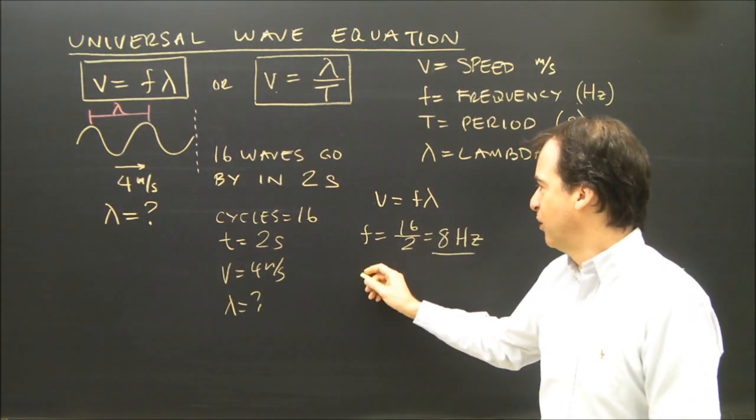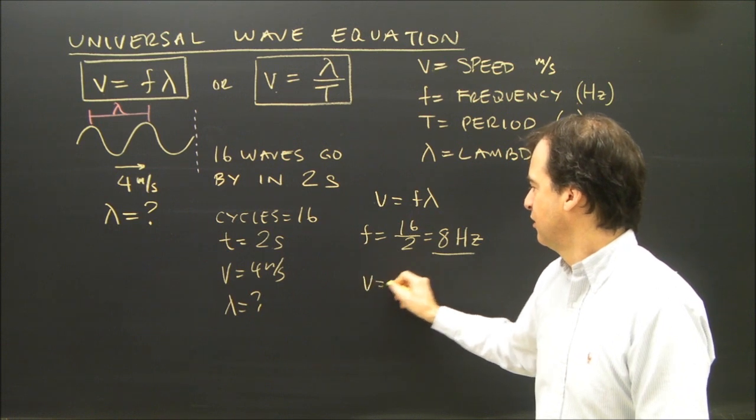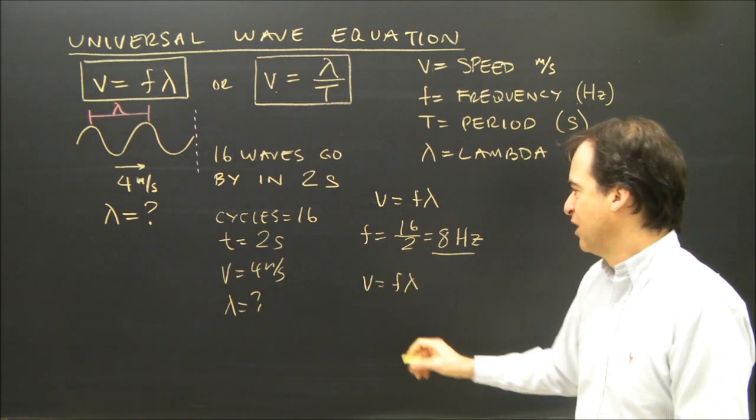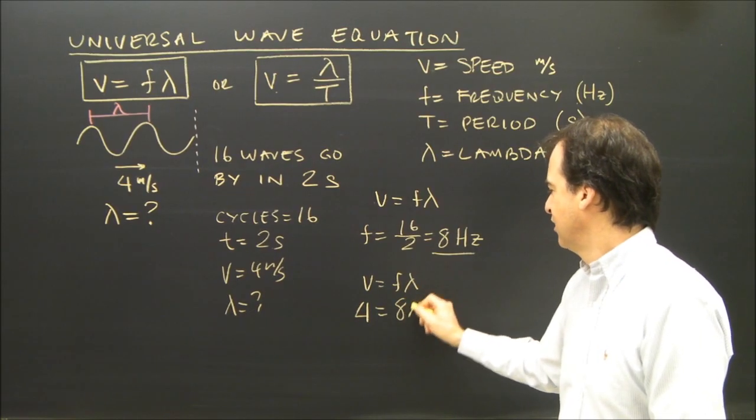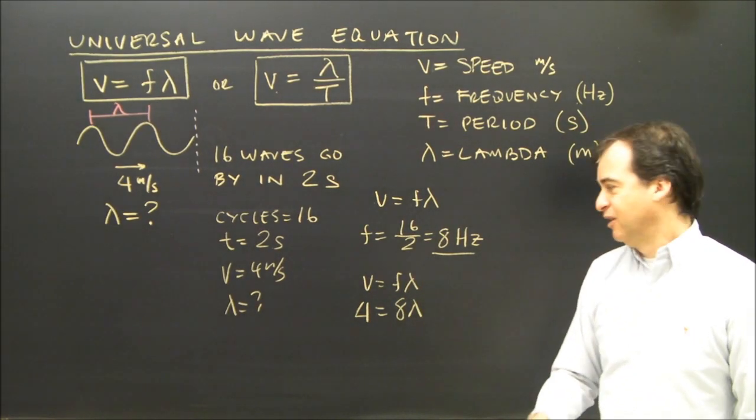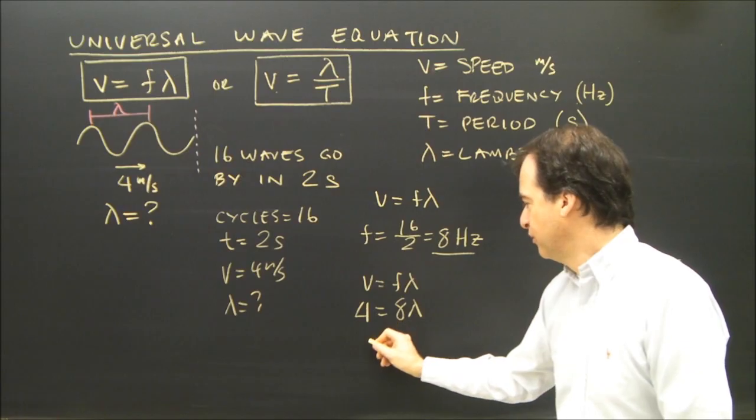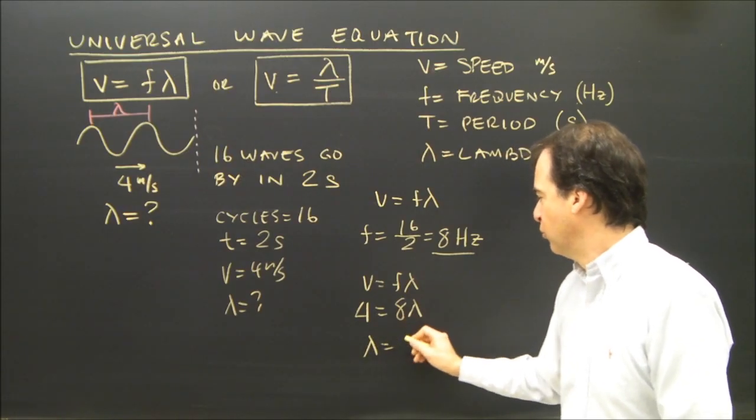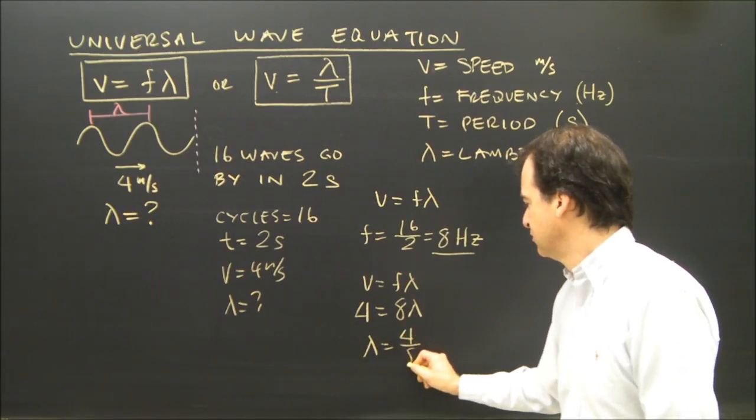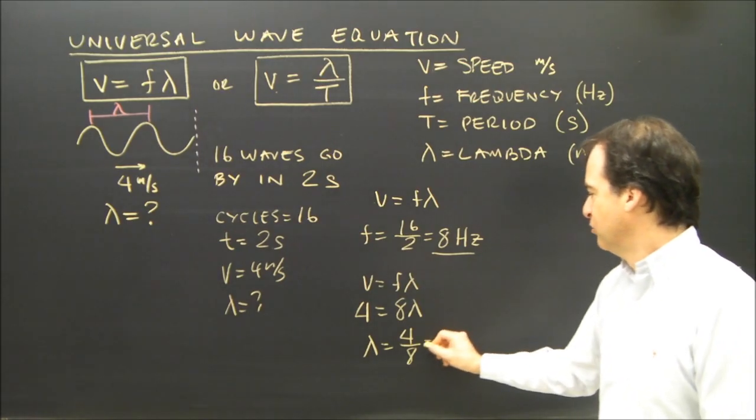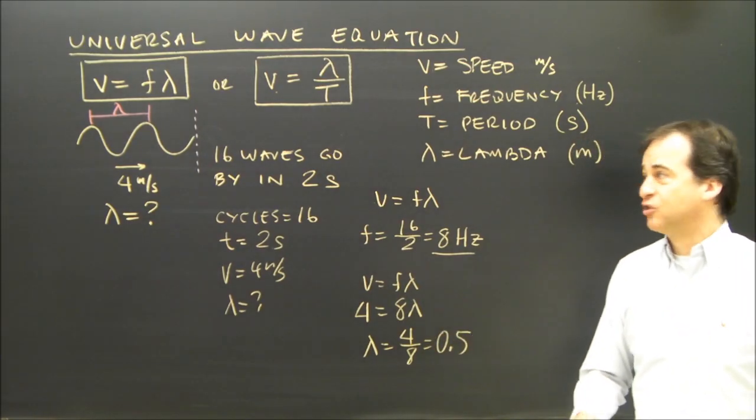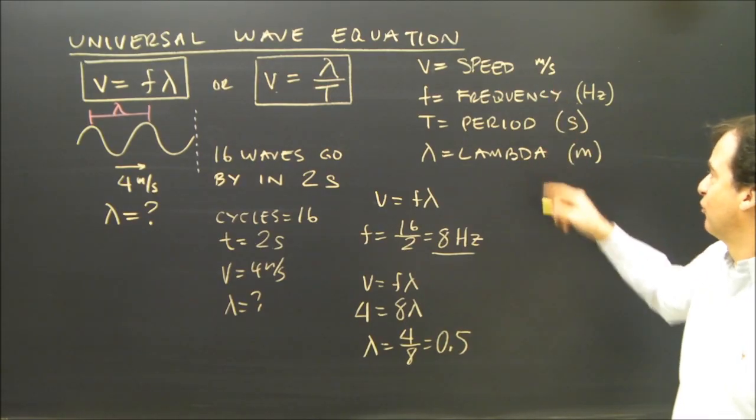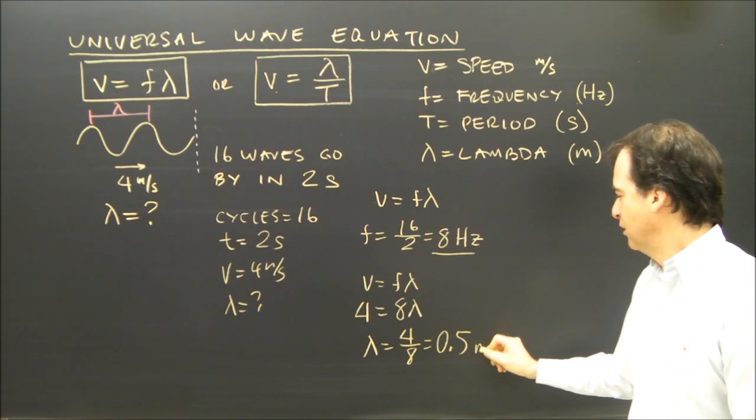So I can plug into this equation, V equals F lambda. I know V is four. I know the frequency is eight. And I'm looking for lambda. Given that, I take the four. I say lambda is equal to four divided by eight. So I divide both sides by eight, which is 0.5. The wavelength is 0.5, and the units, if I've used all the other units correctly, will be in meters.